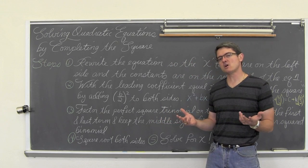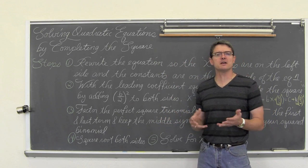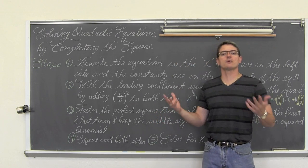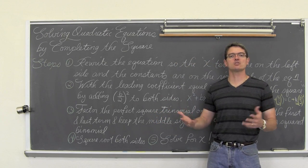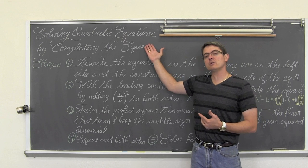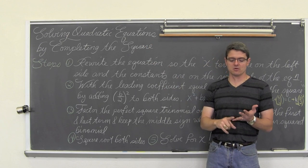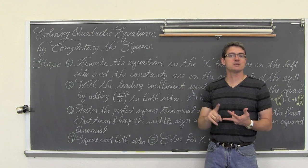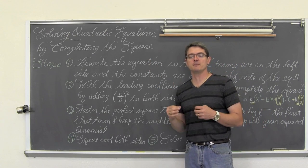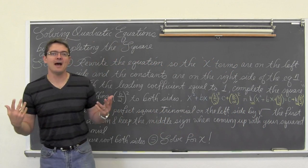So why bother learning how to solve equations with factoring and completing the square? Because those mathematical techniques are used in other areas of algebra and in mathematics in general. When you go to graphing conic sections — your circles, parabolas, ellipses, and hyperbolas — completing the square is going to be an integral process in those problems.